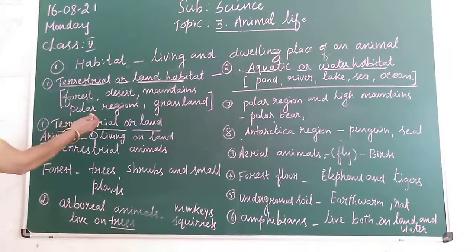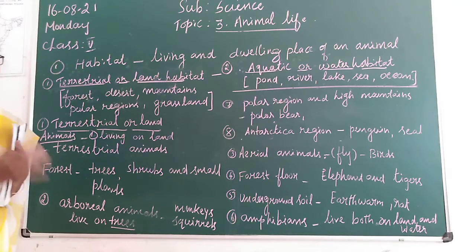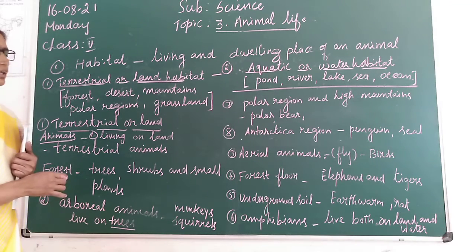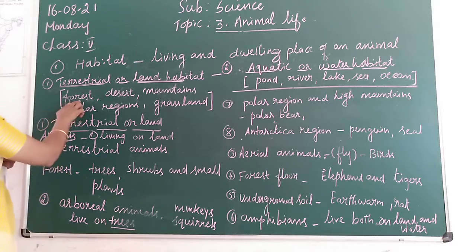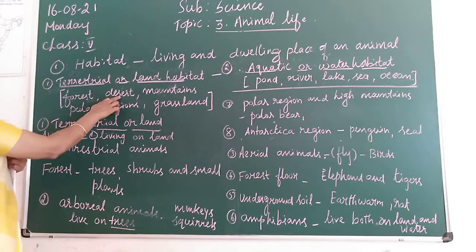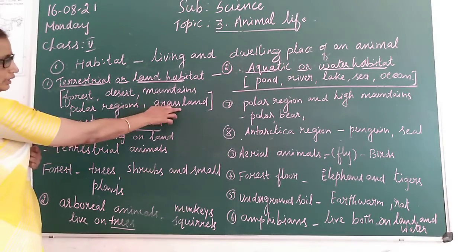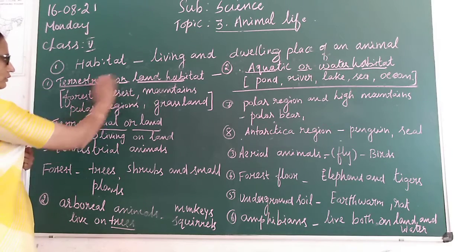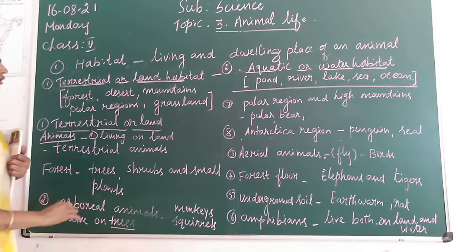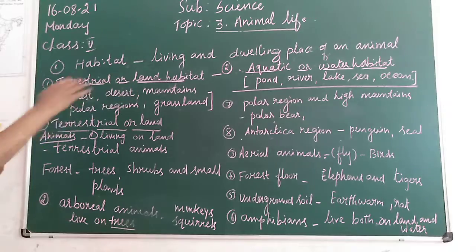Animals which live on land are called terrestrial animals. Big animals live in forests, desert, mountains, polar regions, and grasslands. Animals which live in these regions are called terrestrial habitat animals.